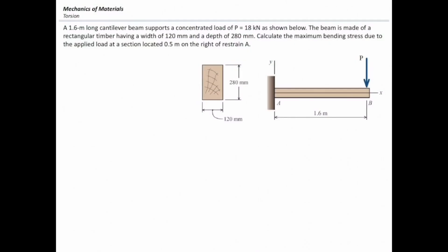A 1.6-meter long cantilever beam supports a concentrated load of 18 kN as shown below. The beam is made of rectangular timber having a width of 120 mm and a depth of 280 mm. Calculate the maximum bending stress due to the applied load at the section located 0.5 m on the right of restrain A.